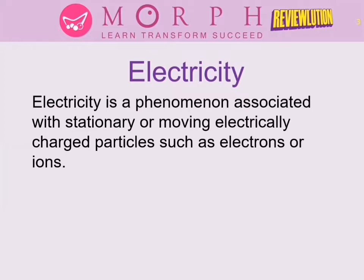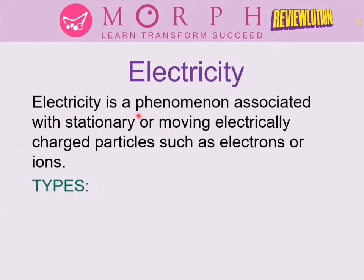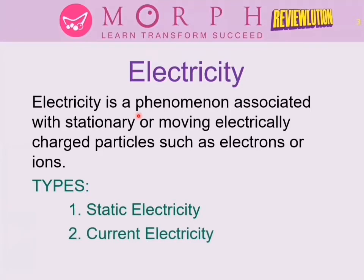Looking at those two types, there is electricity without current happening, and electricity with current — which is the most common one we see in our homes powering our appliances. Current electricity is a uniform flow of electrically charged particles. The stationary type is called static electricity, while the one with moving particles is called current electricity.